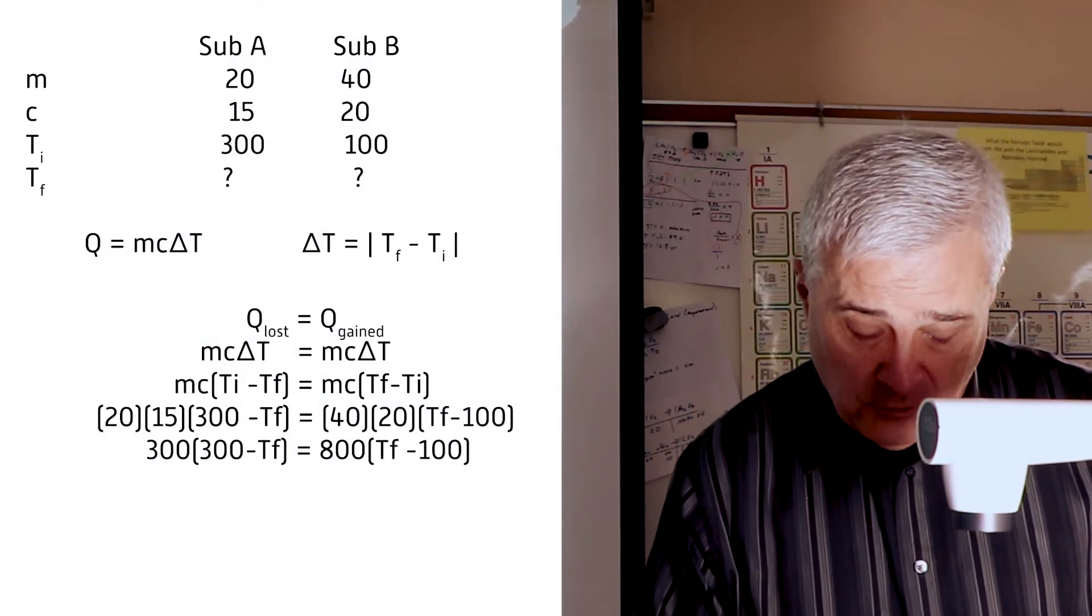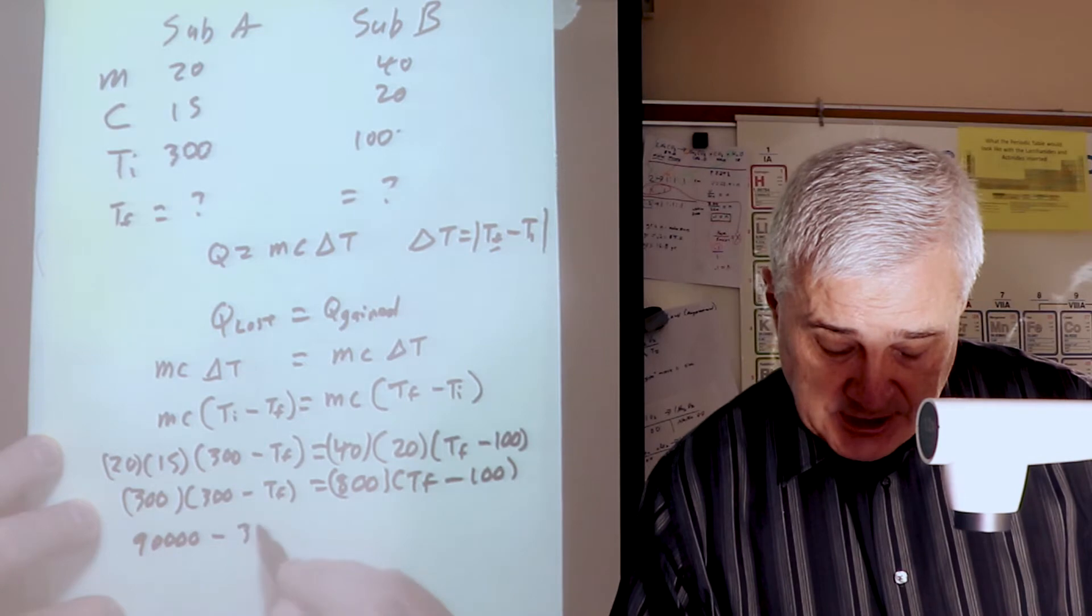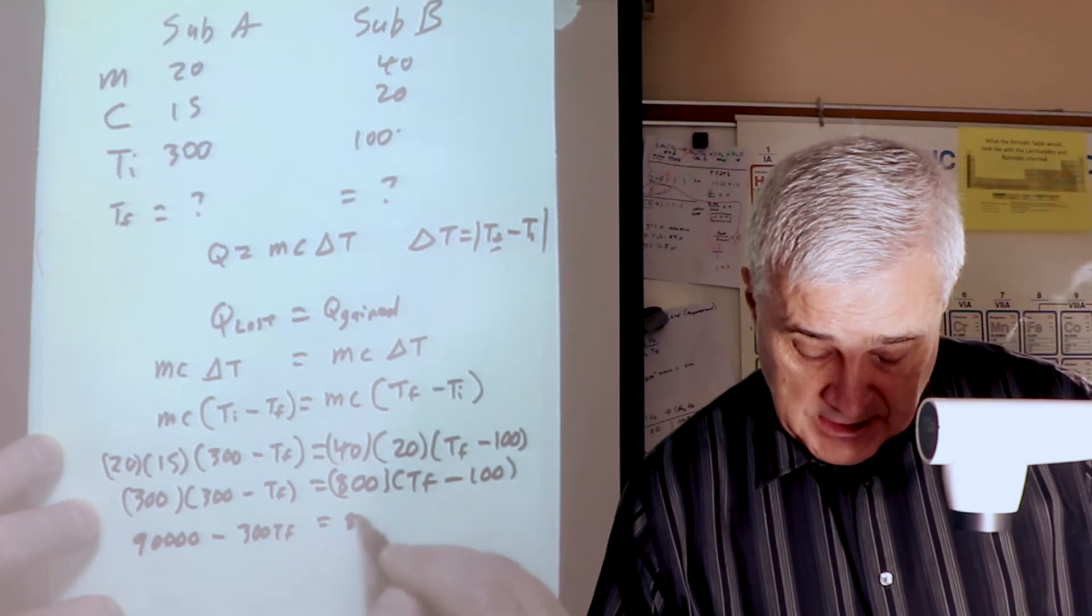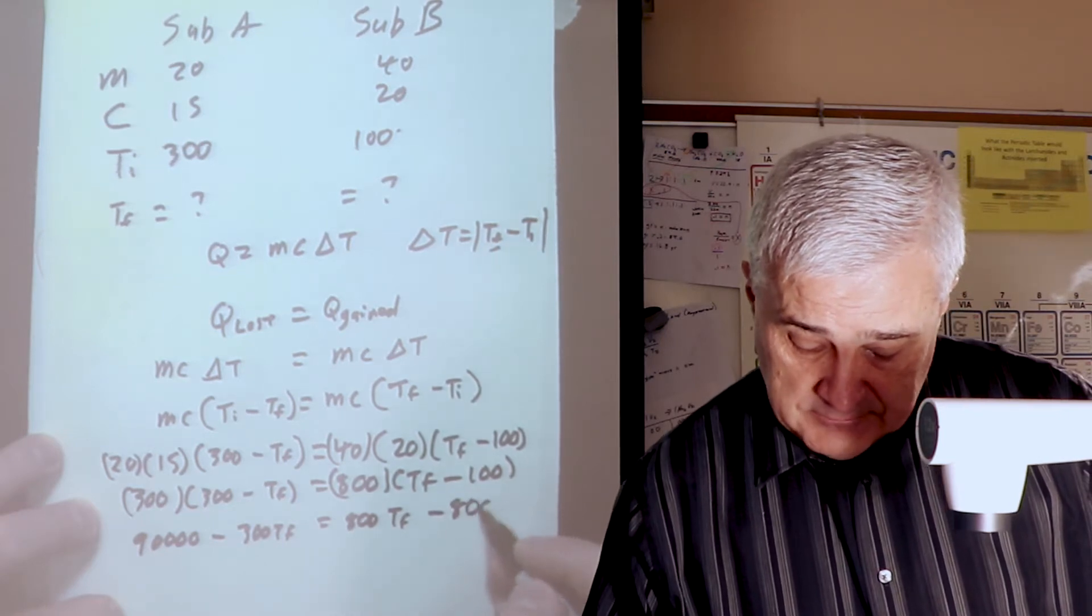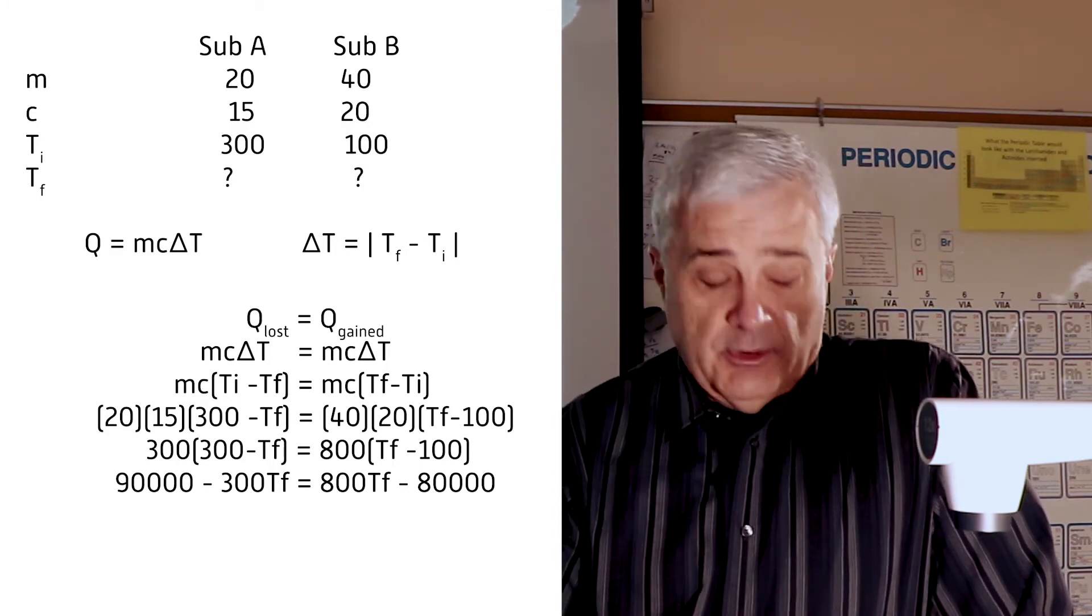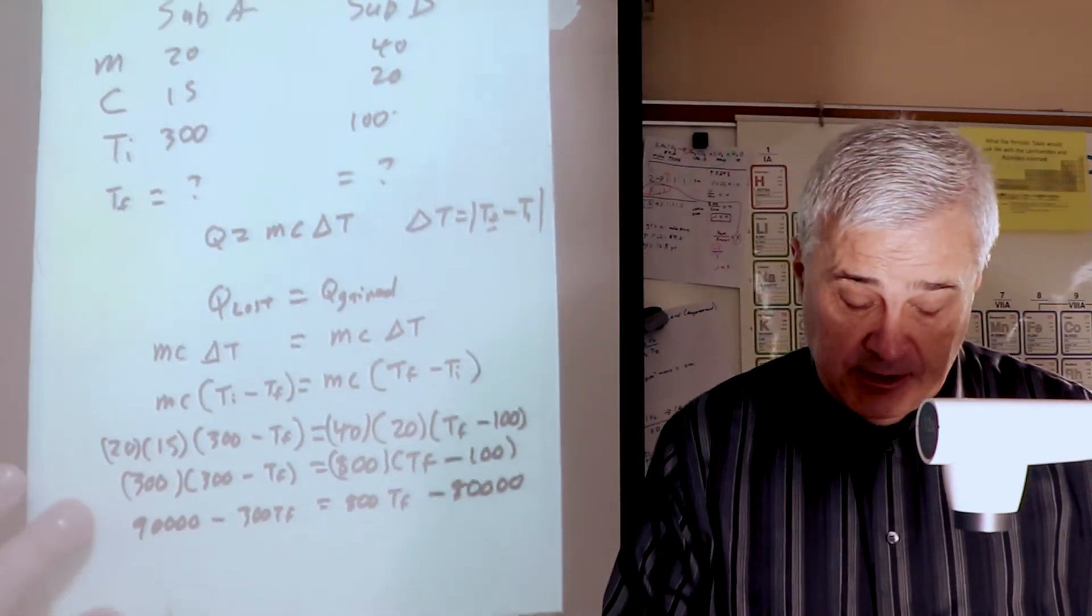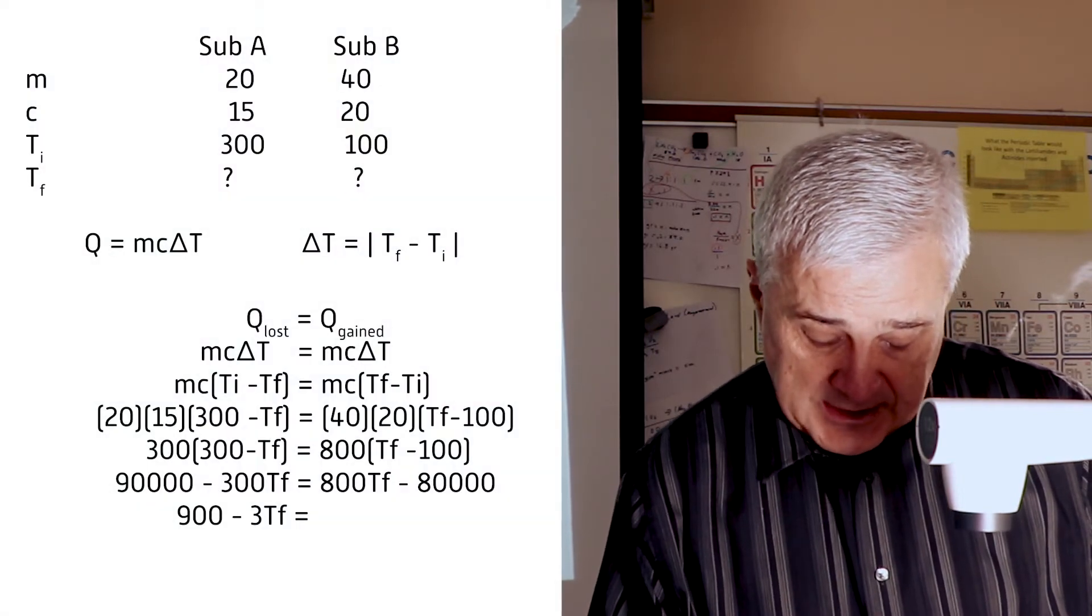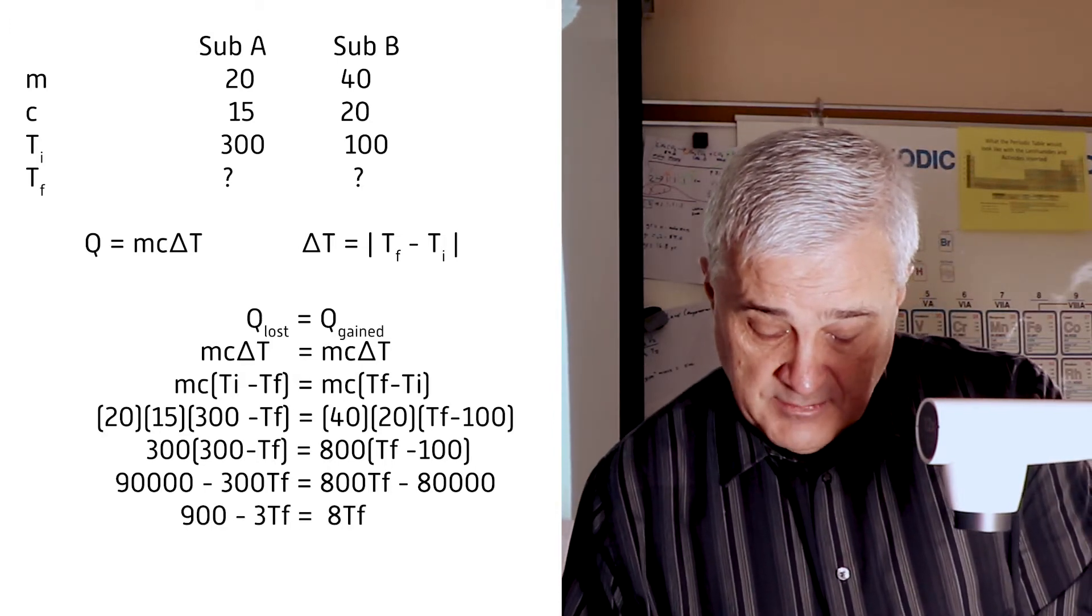Multiply, 3 times 3 times 3 is 9, add four 0s. 300 times T sub F is 300 T sub F. 800 times T sub F is 800 T sub F. 8 times 1 is 8, add four 0s. That's a lot of 0s. I'm going to divide everything by 100. That's going to give me 900 minus 3 T sub F equals 8 T sub F minus 800.